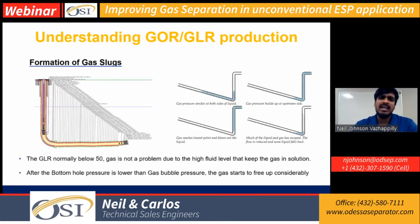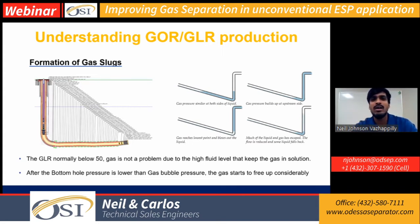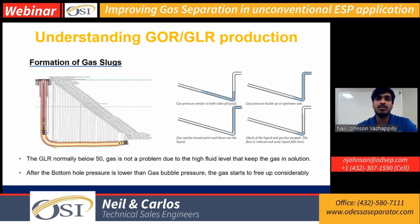Typically, in low GLR wells, high fluid levels keep most of the gas entrained inside the liquid, so the pump does not have to deal with free gas, which is more damaging to performance. In low GLR wells, even at the kickoff point — which is pretty much where most ESPs are landed in an unconventional well — this is manageable.